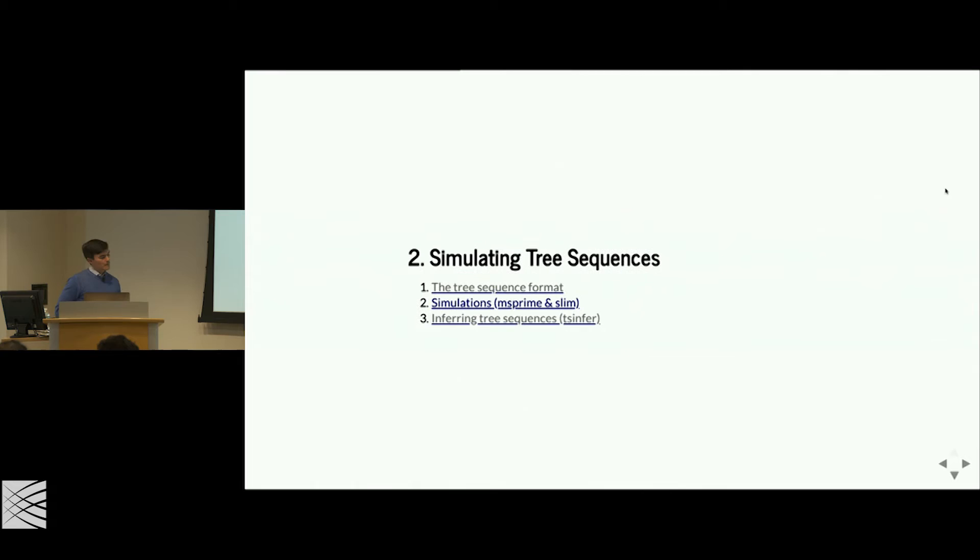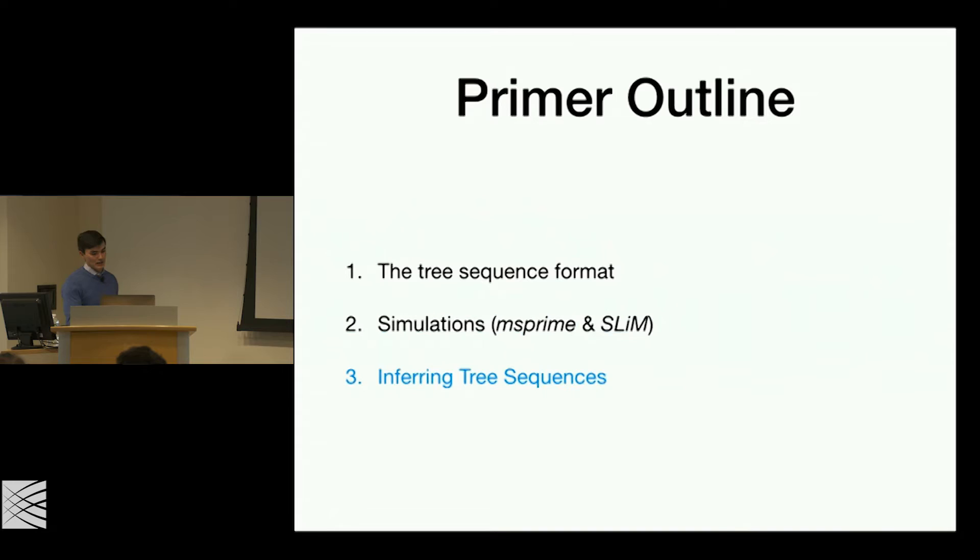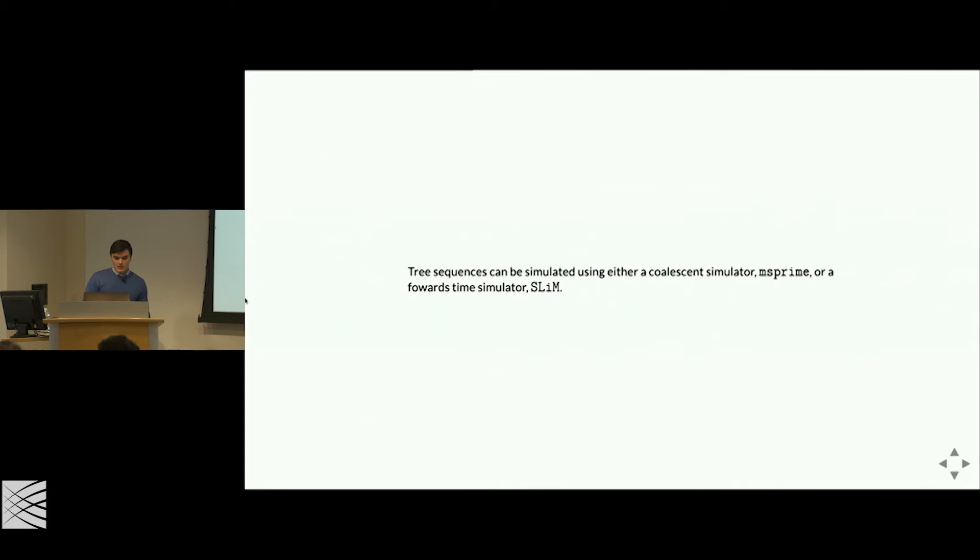That's what a tree sequence is and how to work with it. Let's move to the second part: simulating tree sequences, specifically using MS-Prime. MS-Prime is a coalescence simulator and SLIM is a forward time simulator. With SLIM you can do anything you want with selection, keeping track of samples, or demographic events. But today we'll focus on MS-Prime.